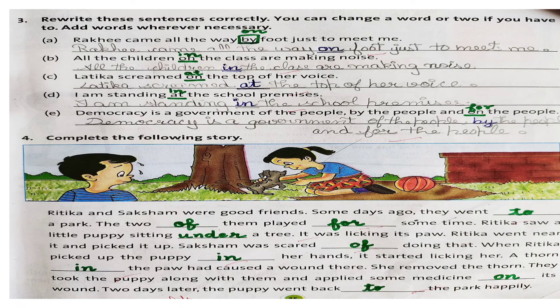And then is your question number three of the same Do It Yourself. Isme bhi humne kya karna hai — sentences mein ek word ko change karna hai, yaani ki jo preposition hai wo galat di hai, wo humne correct karni hai. Toh jaise sabse pehle sentence mein by foot likha hai, toh maine aapko pehle bataaya — by foot nahi hoga, it will be on foot. Vaise hi second mein — on the class nahi hoga, in the class, kyunki class is an enclosed space. Then on the top of a voice — at the top, theek hai, kyunki we are talking about a particular thing. Then I am standing at the school — no, in the school premises, kyunki school premises kaafi bada hota hai, toh in the school premises. Then next is — democracy is a government of the people, by the people, and on the people — nahi, for the people, right.